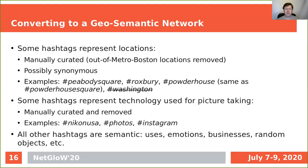Some of these hashtags represent locations, some represent places, some represent things, and some represent something else. So we separated all hashtags into three major groups. In the first group, we have hashtags that represent various locations, in particular neighborhoods. We had to manually curate the list of locations — first, to identify the locations, and second, to remove locations that were outside of Metro Boston, such as Washington DC, Seattle, or European places like London.